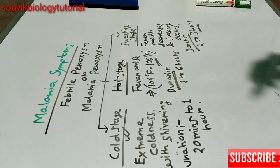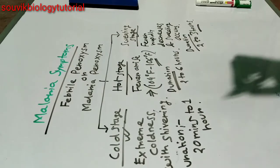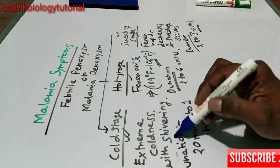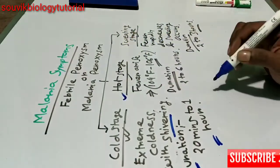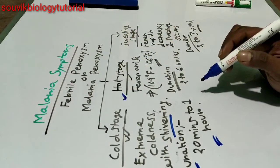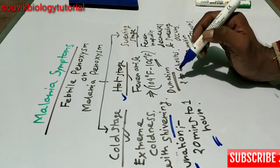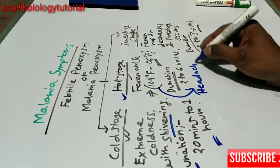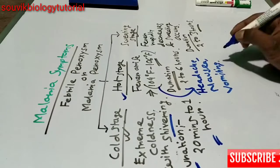The most common symptoms of malaria are known as malaria paroxysm or febrile paroxysm, which is comprised of cold stage, hot stage, and sweating stage. In the cold stage, the patient experiences extreme coldness with shivering, lasting 20 minutes to 1 hour. In the hot stage, fever appears and the temperature varies from 104 to 106 degrees Fahrenheit. Also in the hot stage, headache, nausea, and vomiting also occur.